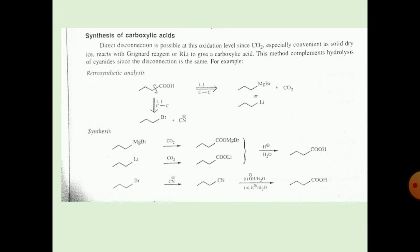The second option: an alkyl halide is reacted with the cyanide group, forming the alkyl cyanide. In the last step, OH/H2O reacts with the cyanide, and then H+ or H2 conditions give the carboxylic acid. These are the synthesis routes for a carboxylic acid.